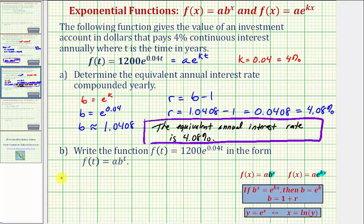Now for part b, we're asked to write the given exponential function with base e in the form f(t) = ab^t. Because we know the value of b, and we also know a, the initial amount, we have all the information we need to write the exponential function in this form.